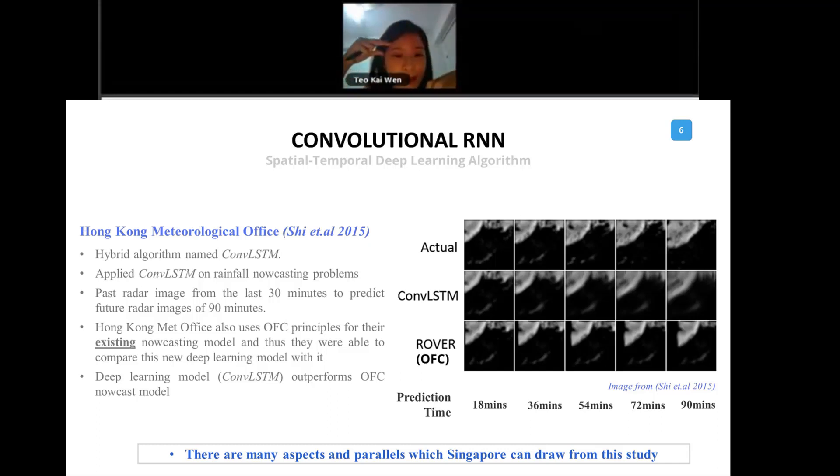What they did was they use past radar images and then predict future radar images of the next 90 minutes. This Hong Kong met office coincidentally also uses the same optical flow constraint principle, same as Singapore, for their nowcast model. They were able to compare this deep learning model with the optical flow constraint model. They found that this deep learning model ConvLSTM actually outperforms the optical flow constraint nowcast model. You can see the results here are quite apparent.